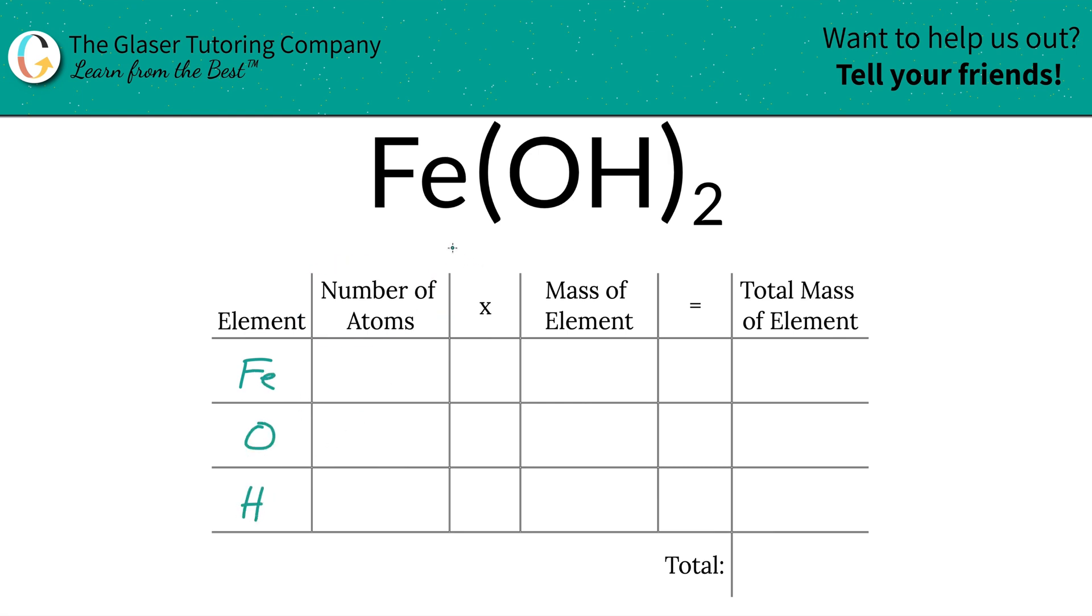Then we're going to write down the number of atoms. That's where the subscripts come into play. If there's no subscript down there, there is assumed to be a 1, and therefore there's one iron.